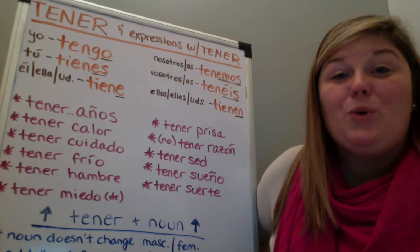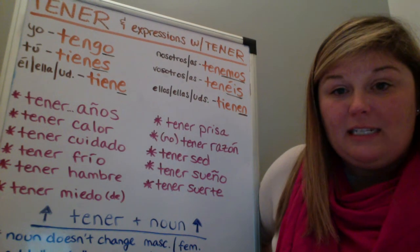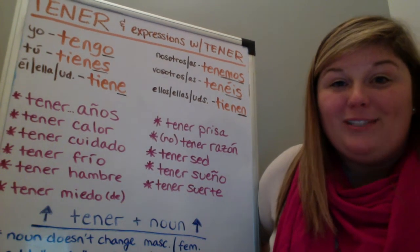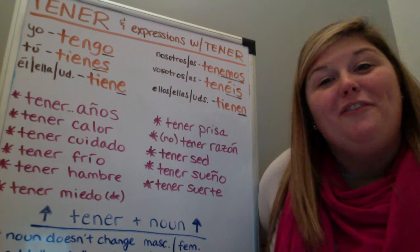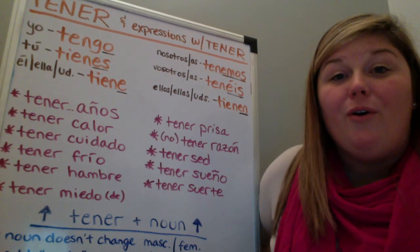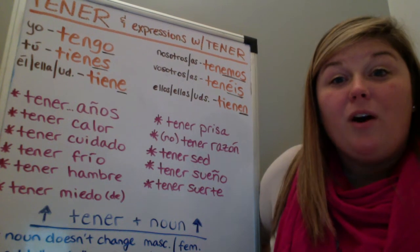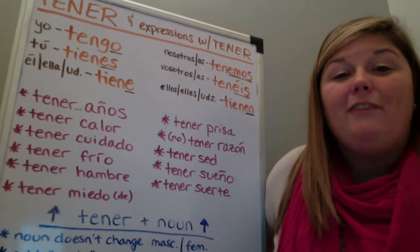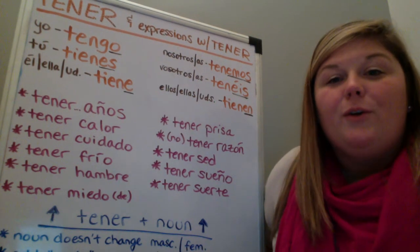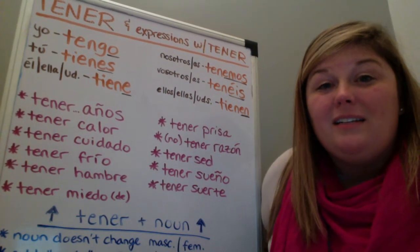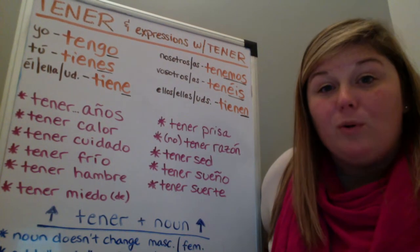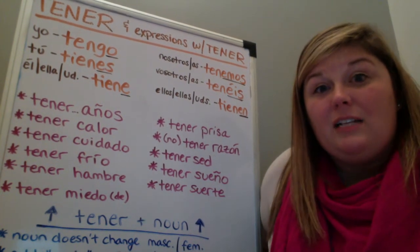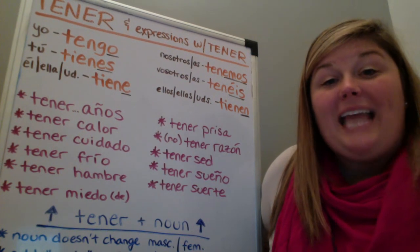The next expression is tener cuidado, which means to be careful — literally 'to have caution.' We wouldn't say 'have caution' in English; we'd say 'be careful.' So 'I am careful' is tengo cuidado, and 'you are careful' is tienes cuidado. The next expression is tener frío, which means to be cold — literally 'to have cold.' So if you want to say 'I am cold,' we'd say tengo frío.